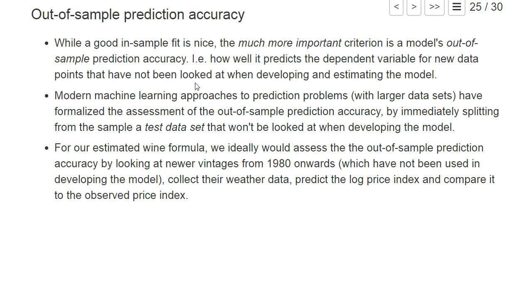While it's good that our model can nicely describe the prices of vintages used to estimate the model, which is called an in-sample fit, the much more important criterion is out-of-sample prediction accuracy. How well can it describe the future auction prices of vintages they have not looked at when they developed their model, for future years? Only if the model is helpful for new observations is it really a useful model for your investment decision.